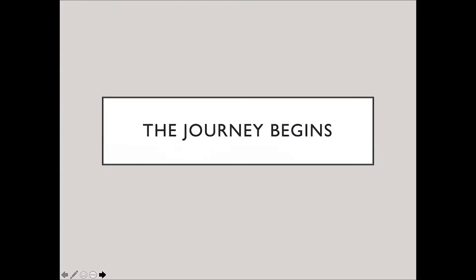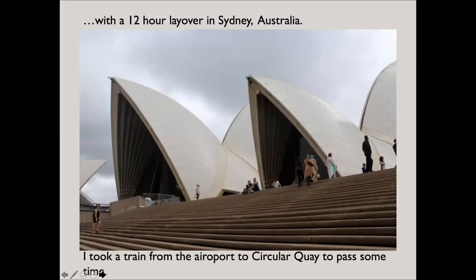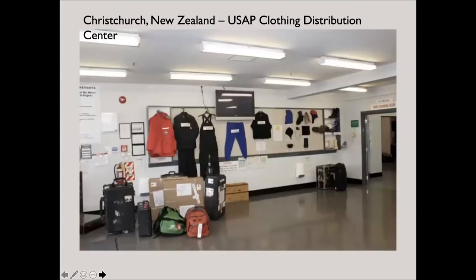The journey begins. You fly commercially from Los Angeles to Christchurch, New Zealand. On the way, I had a stopover in Sydney for 12 hours, so I rented a locker, put my stuff in a locker, and took a train from the airport to the city center — I went to the Opera House. Once you arrive in Christchurch, they have a place called the Clothing Distribution Center, basically a warehouse where you can pick up all the cold weather gear you need to keep you safe and warm down there.